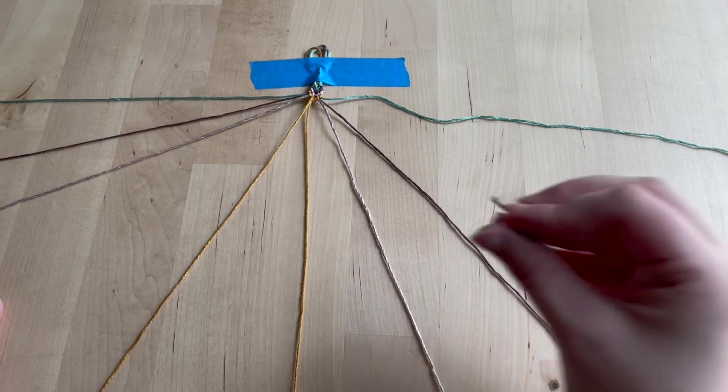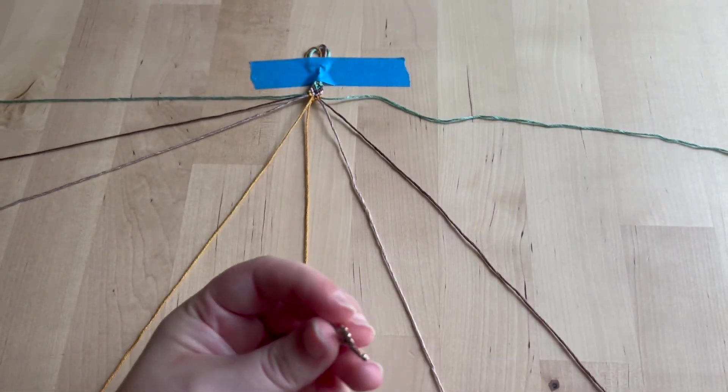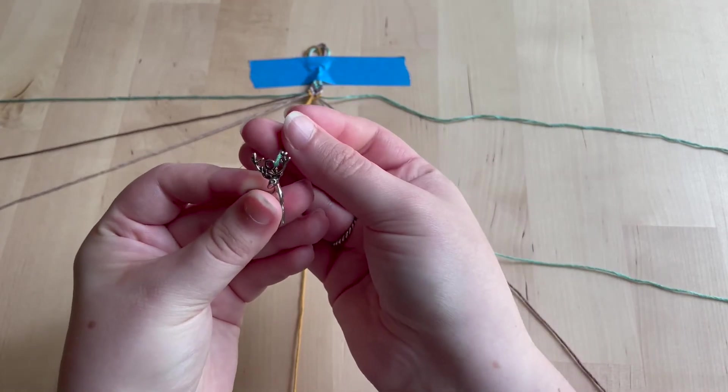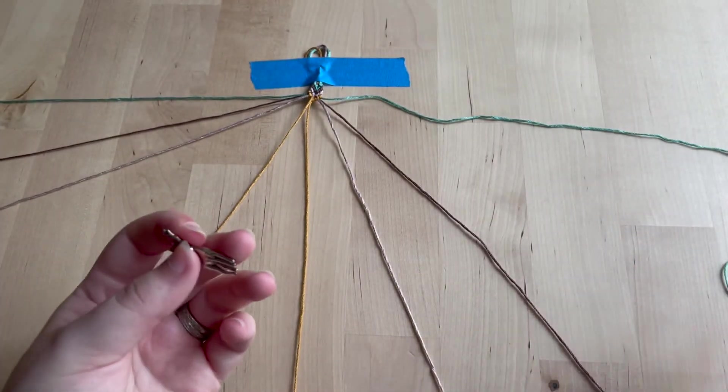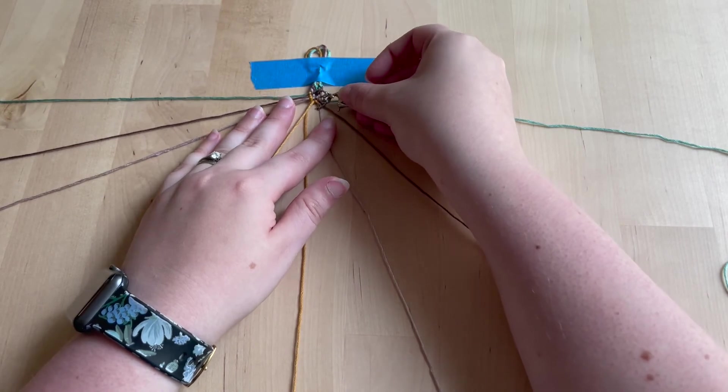When you want to attach your charm, all you need to do is slip it through the end of the rightmost strand and make your knot like normal, and it will be attached in your knot.